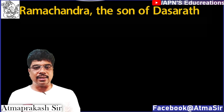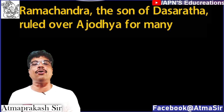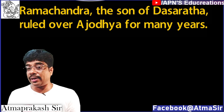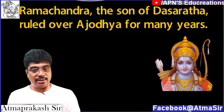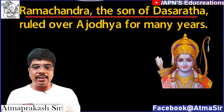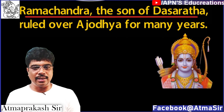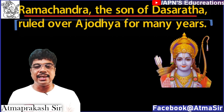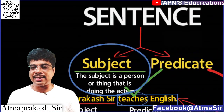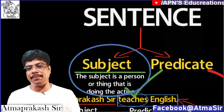Similarly, take another example: 'Ramachandra, the son of Dasaratha, ruled over Ayodhya for many years.' My question is: who ruled over Ayodhya? It is Ramachandra, the son of Dasaratha. Hence, the subject is 'Ramachandra, the son of Dasaratha,' and the rest part of the sentence is the predicate. I hope you now have a basic understanding of subject and predicate.